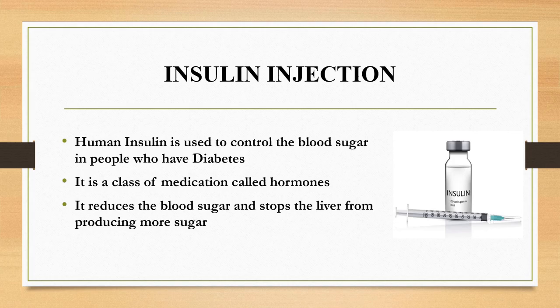Let's see the functions of insulin injection. Human insulin is used to control the blood sugar in people who have diabetes. It is a class of medication called hormones. It reduces the blood sugar and stops the liver from producing more sugar.